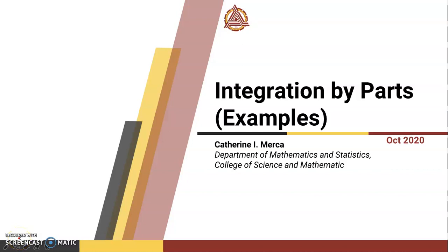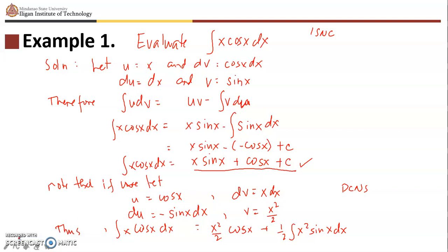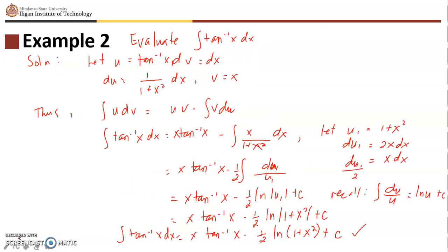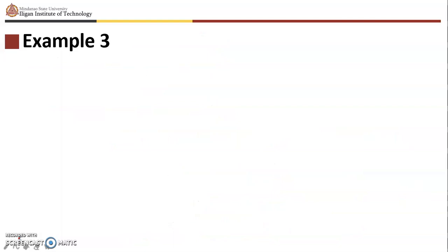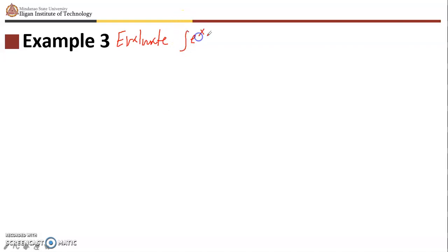We are now done with the first two examples on integration by parts — example 1 and example 2 — and we are now on example 3. Let's evaluate the integral of e to the x times sine x dx.